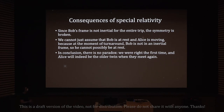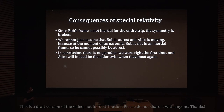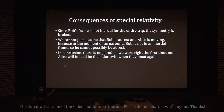We cannot assume Bob is at rest and Alice is moving, because at the moment of turnaround Bob is not in an inertial frame, so he cannot possibly be at rest. If you're at rest, that means you're in an inertial frame; if you're not in an inertial frame, you cannot be at rest. There's no paradox — Alice will indeed be the older twin when they meet again, because the symmetry has been broken. Bob cannot consider himself as staying at rest, since at one point during his trip he is not in an inertial frame, so his calculation is incorrect.